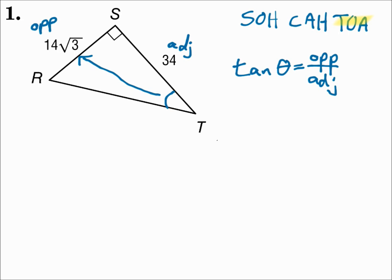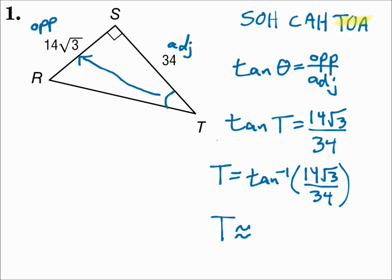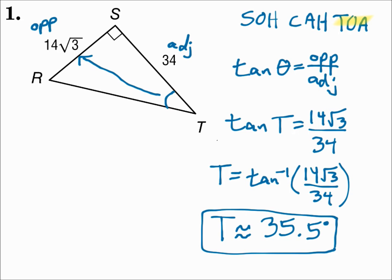So we're going to use tangent. Substitute in: tangent of theta, which is T, equals opposite — 14 square root of 3 — over adjacent, 34. Since I'm looking for angle T, I'm going to do the arc tangent. T equals the arc tangent of 14√3 over 34. When you punch that in your calculator, T is approximately 35.5 degrees.